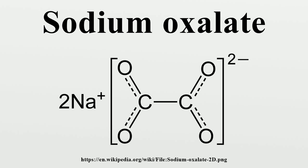Sodium oxalate can be prepared through the neutralization of oxalic acid with sodium hydroxide in a 1 to 2 acid-to-base molar ratio. Half-neutralization can be accomplished with NaOH in a 1 to 1 ratio, which produces NaHC2O4, monobasic sodium oxalate or sodium hydrogen oxalate.